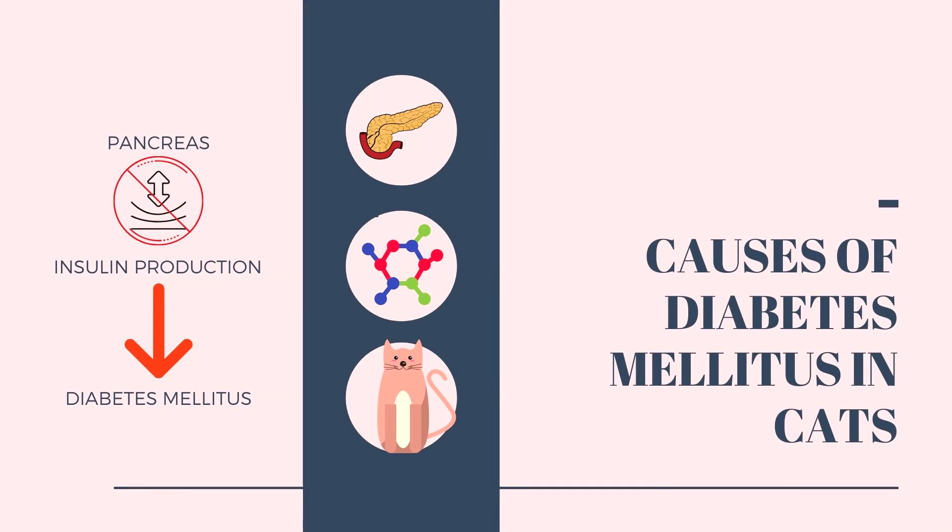Feline diabetes mellitus occurs when the pancreas gland does not produce enough insulin. Insulin is the hormone that allows many tissues of the body to utilize glucose. As insulin levels fail, glucose becomes elevated, producing many adverse side effects in the body.